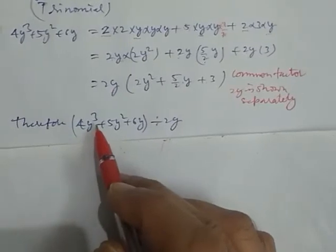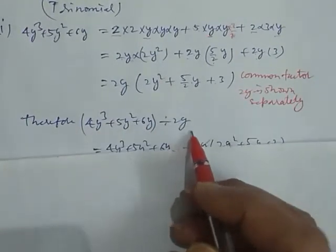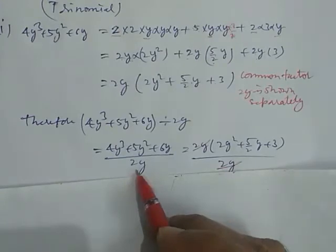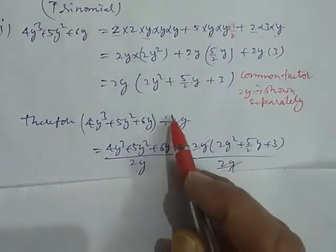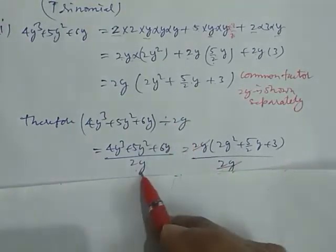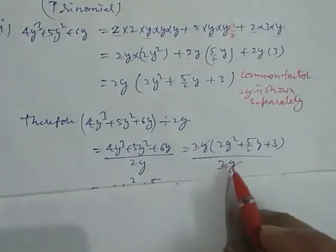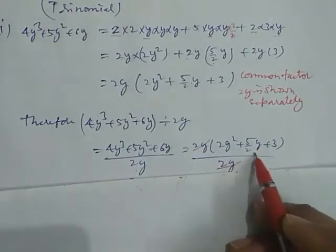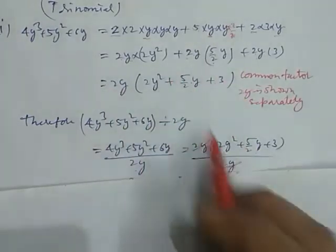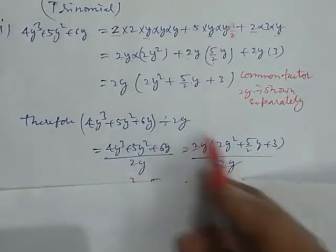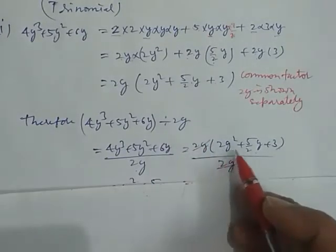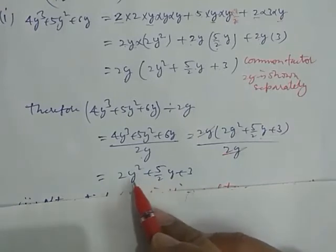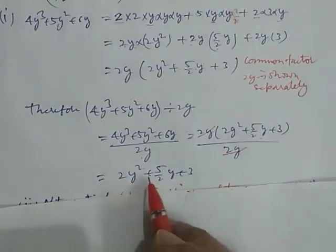Therefore, 4y cube plus 5y square plus 6y divided by 2y equals: we put 2y in the denominator. This equals 2y into 2y square plus 5 by 2y plus 3 — after taking 2y as common, we write this down, and this 2y cancels out by this 2y. The result is 2y square plus 5 by 2y plus 3. This way we calculate and perform the division of a polynomial by a monomial. But there is another method.